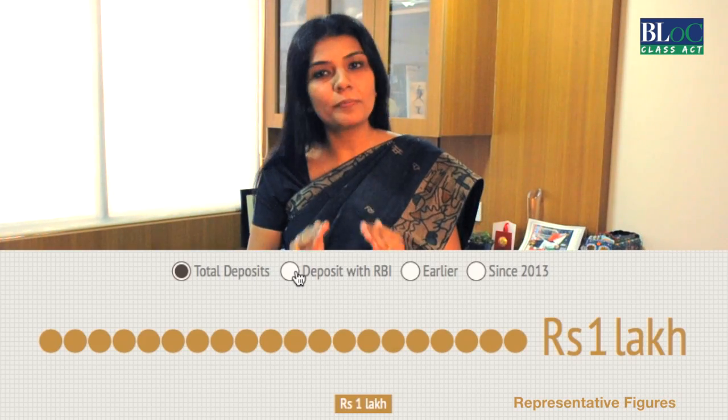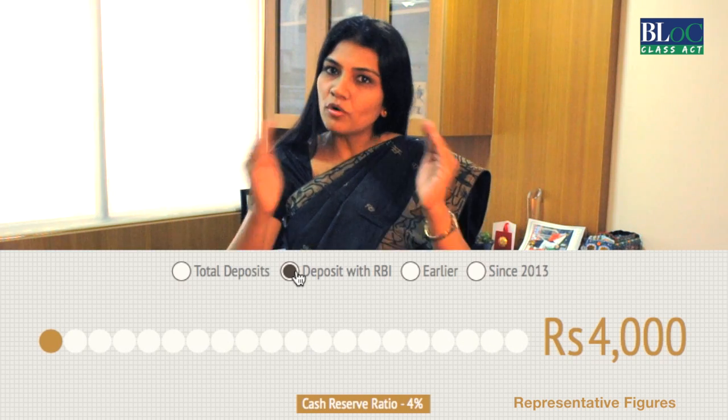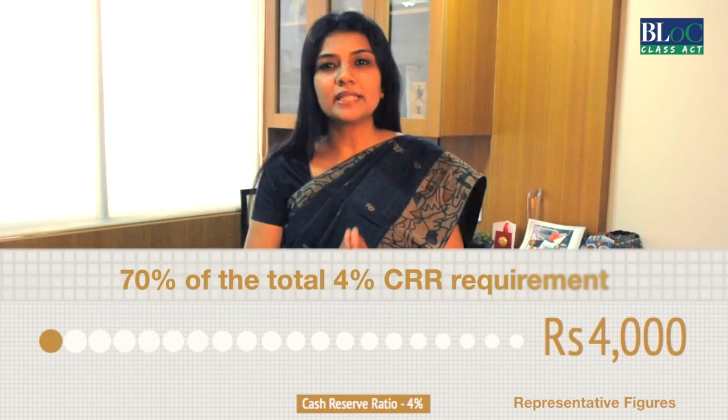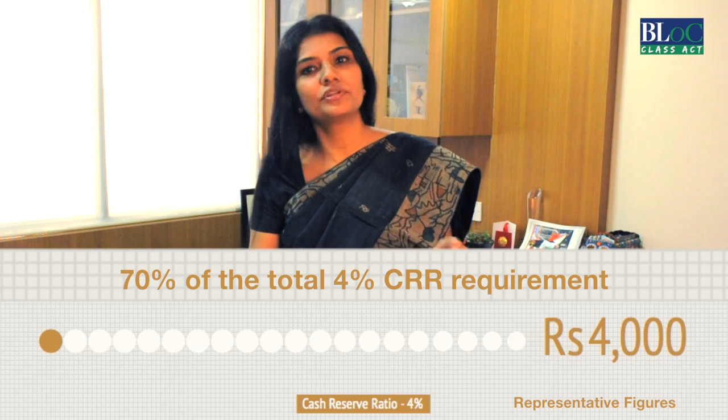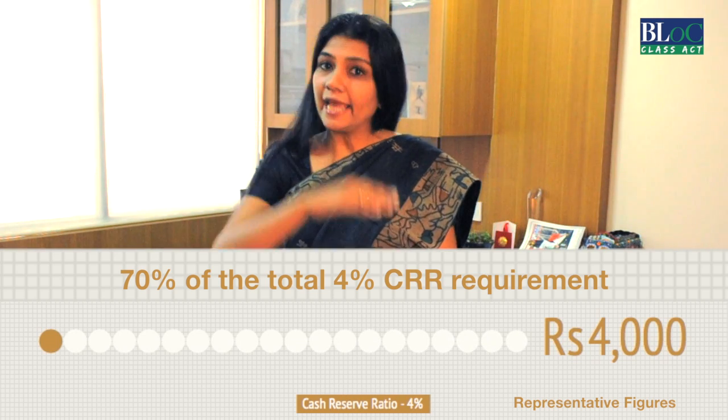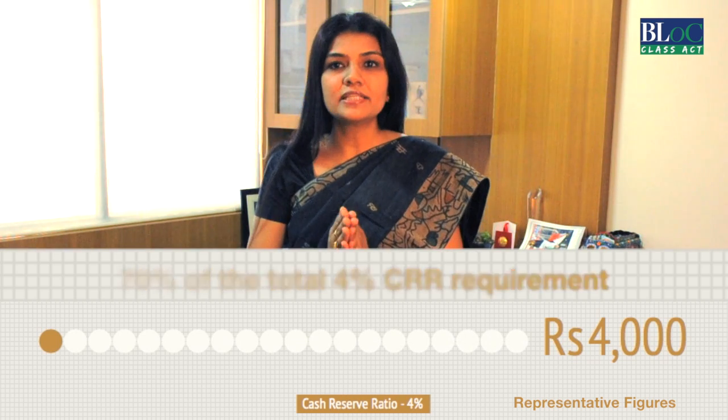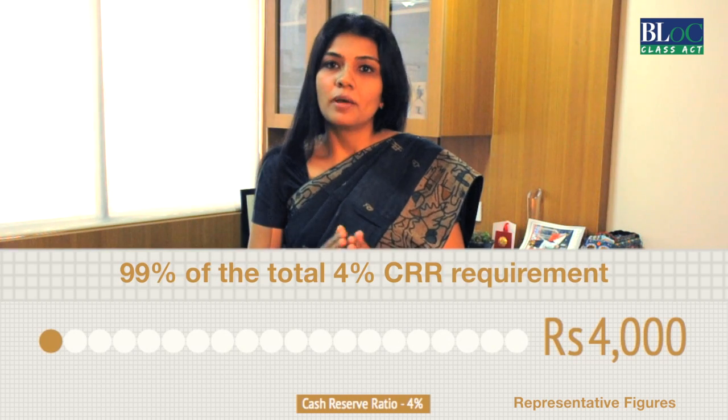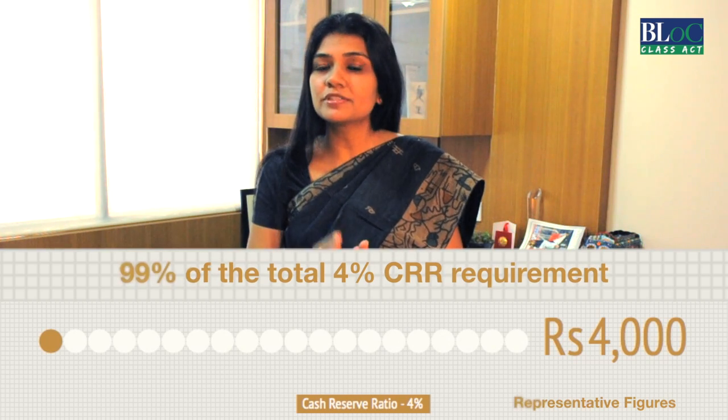What does this mean? Banks need to maintain cash with the RBI on a daily basis. Based on the CRR requirement of 4%, what the banks need to set aside is decided on a fortnightly basis. Earlier, banks needed to maintain 70% of this total requirement daily. By the end of the fortnight, the banks needed to maintain the overall 4% requirement. Now, banks need to maintain 99% of this requirement daily.